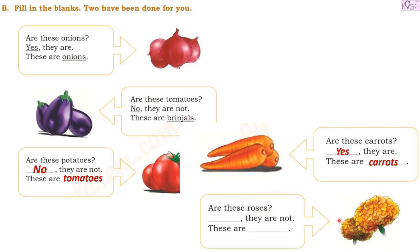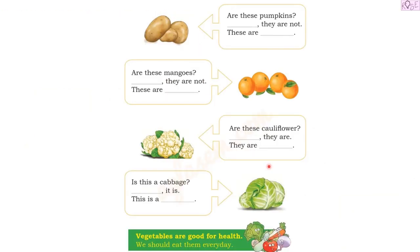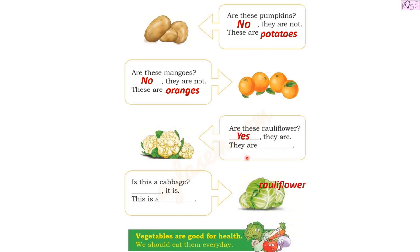Are these roses? No, they are not. These are marigolds. Are these pumpkins? No, they are not. These are potatoes. Are these mangoes? No, they are not. These are oranges. Are these cauliflower? Yes, they are. Is this a cabbage? Yes, it is — this is a cabbage. Vegetables are good for health and we should eat them every day. We'll meet another time with another fun video — until then, bye!